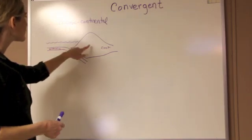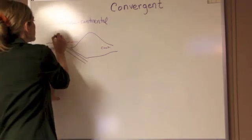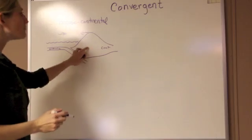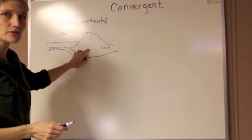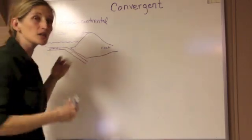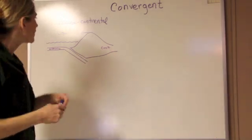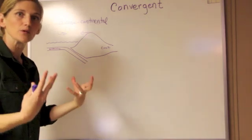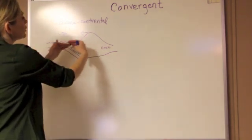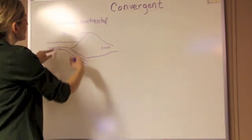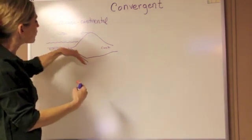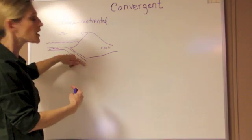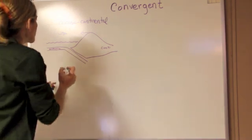When this oceanic plate collides with the continental plate — which is felsic overall in composition — that felsic material is more buoyant and has a lower density. So when these two collide together, the denser oceanic plate is going to be forced down below through the process of subduction beneath the continental plate.